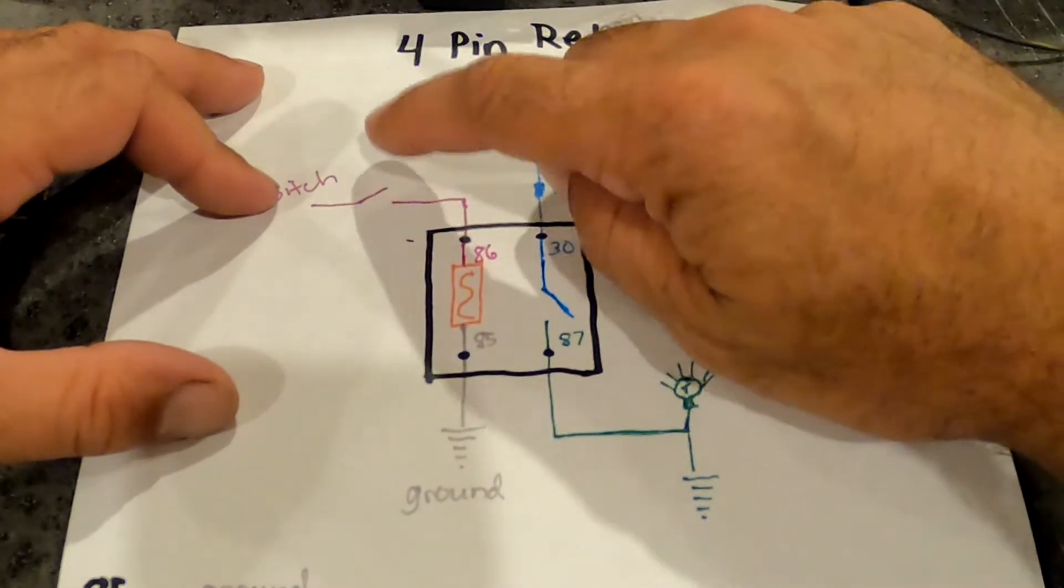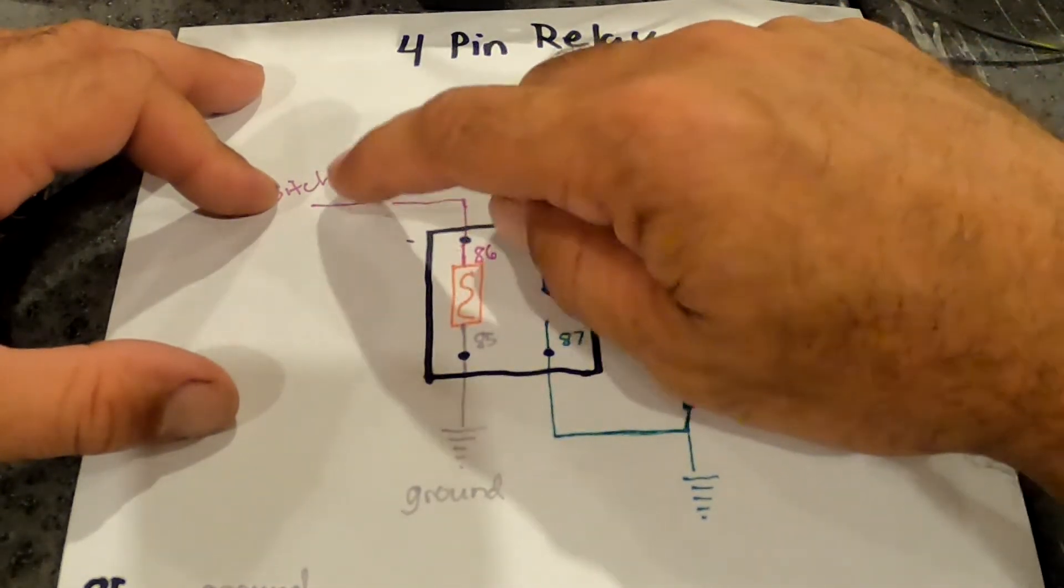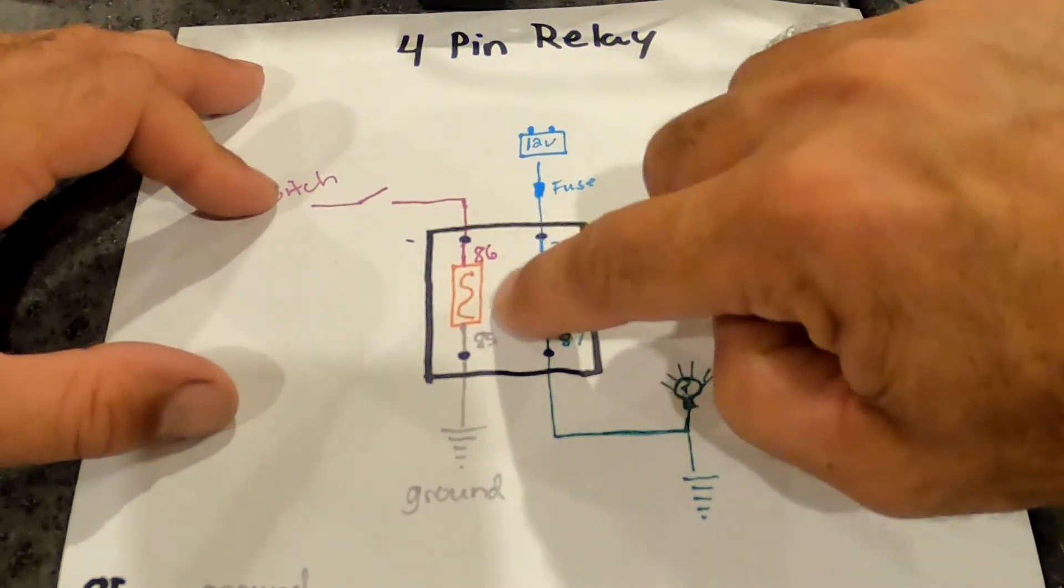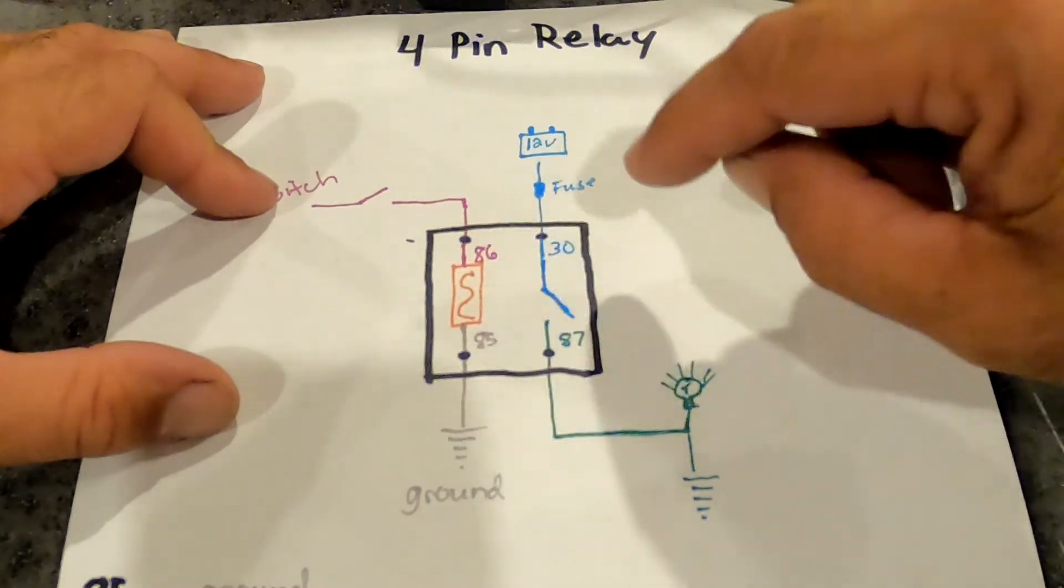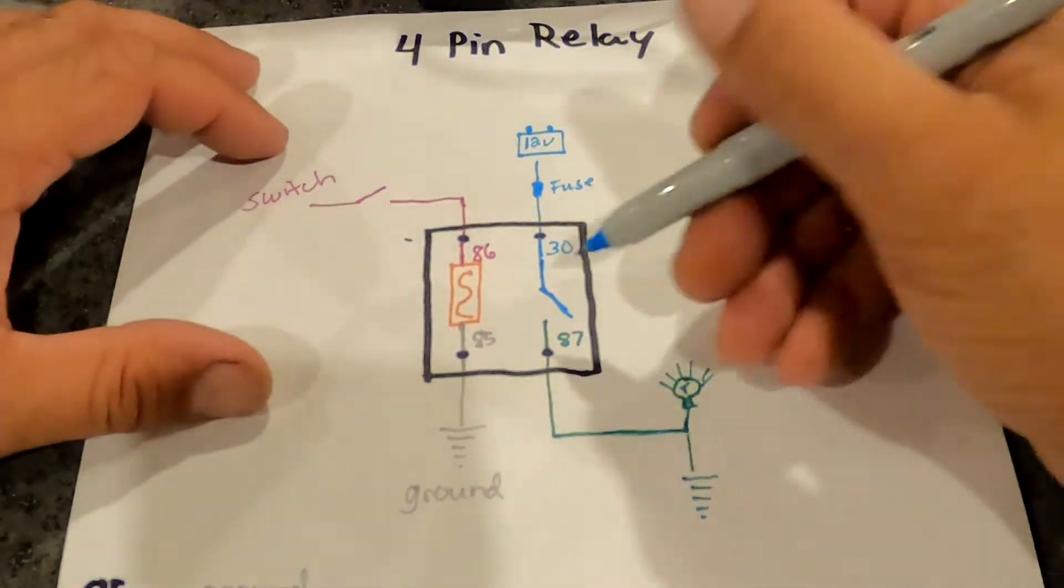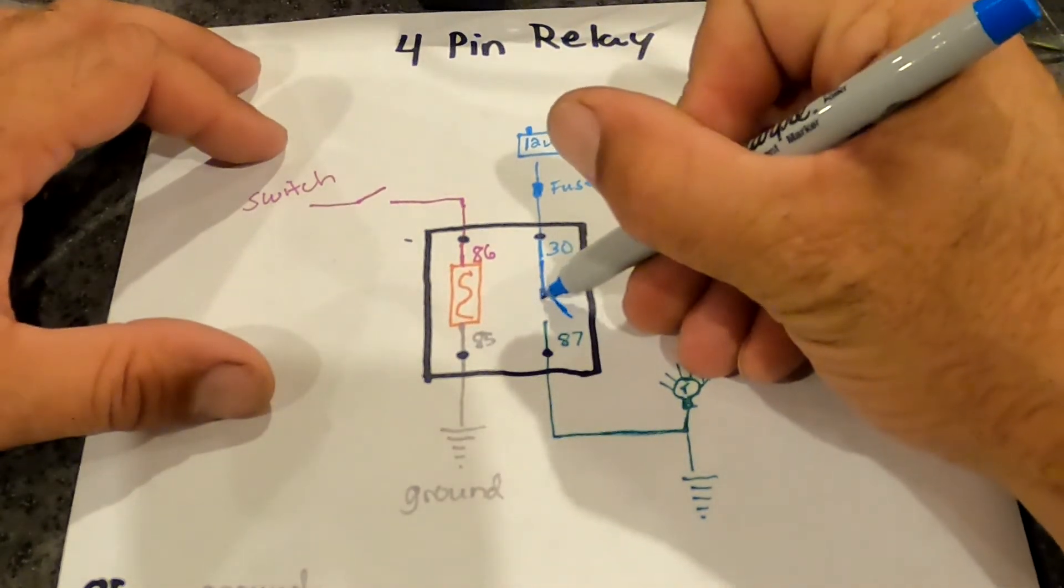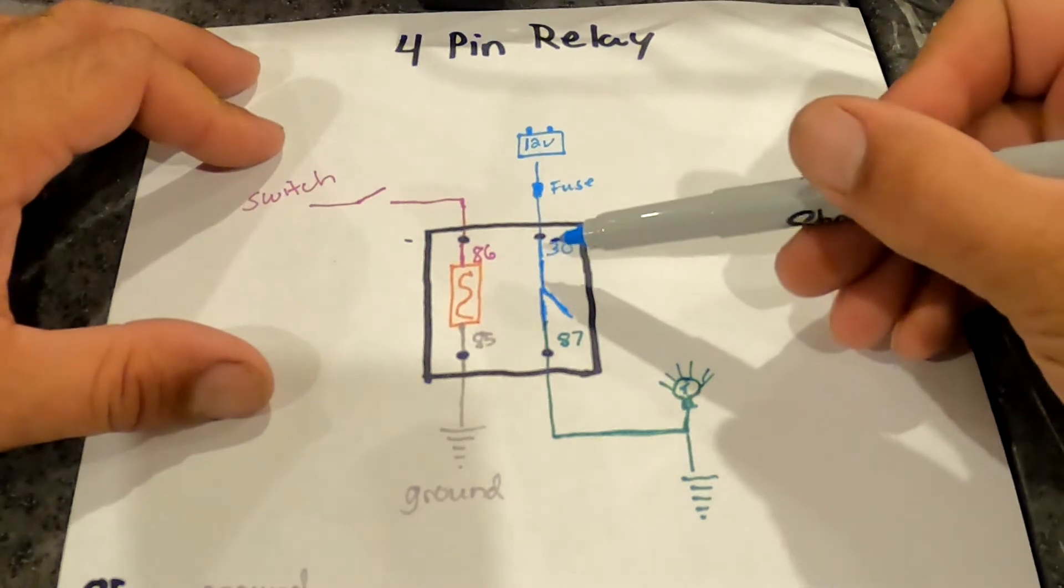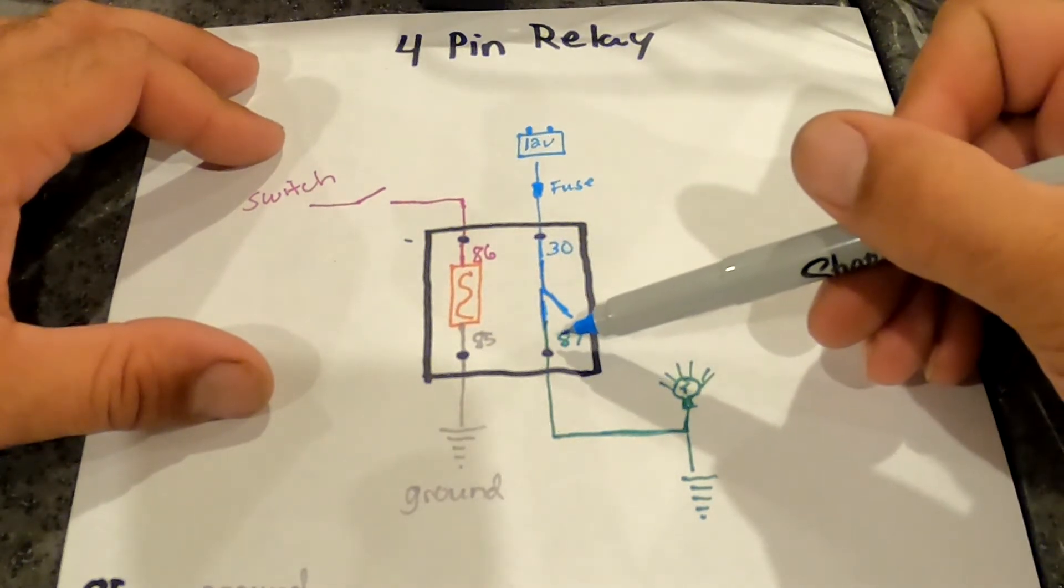Then when you switch your toggle switch, this switch opens up, puts power in here, activates this electromagnet. And when that activates, it actually pulls this switch closed and it will connect pin 30 with pin 87.